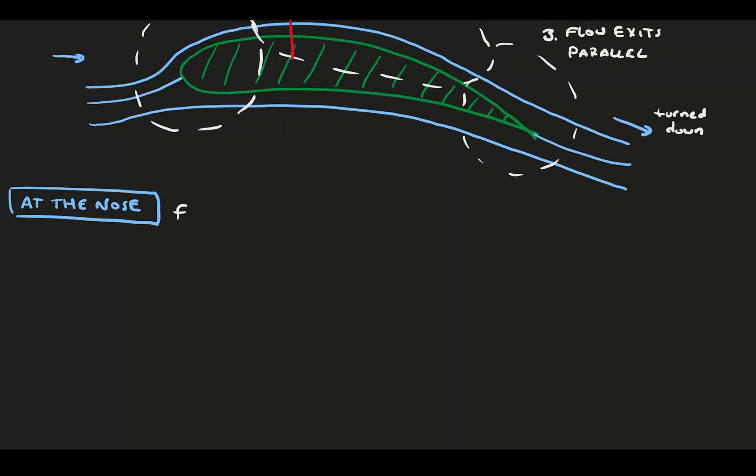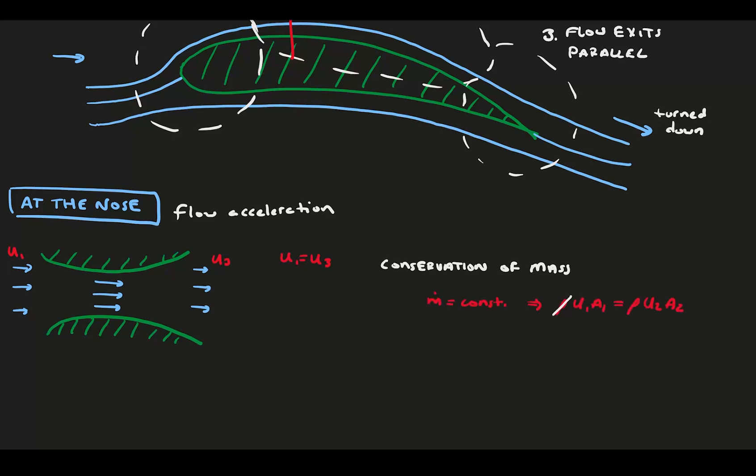At the nose, we have a dramatic increase in flow velocity, which happens as a result of the conservation of mass. Consider flow through a channel with a converging cross-section. Flow comes in with velocity u1 and leaves with velocity u3, and in this case u1 equals u3. However, in the middle, we have acceleration because of mass conservation. m dot conserved means rho u A is equal everywhere, and since the density is the same, and if our cross-sectional area goes down, the velocity must go up.